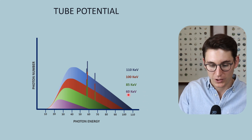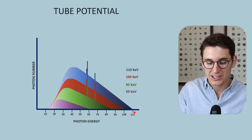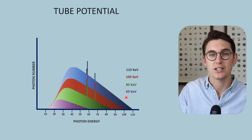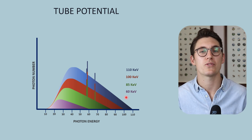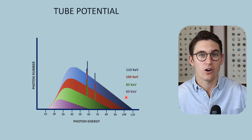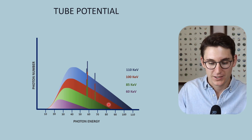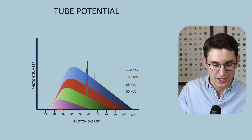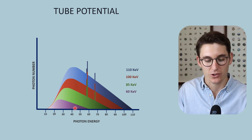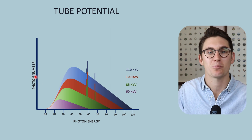We've got four different spectra from 60 keV all the way up to 110 keV. The maximum photon energy corresponds to the tube potential — electrons that collide directly with the nucleus lose all their kinetic energy, released as Bremsstrahlung radiation at an energy equal to that tube potential. Our characteristic x-rays again do not change since we haven't changed our target material. But our average energy increases from 60 to 110 keV, and the area under the graph — our x-ray beam quantity — has also increased.